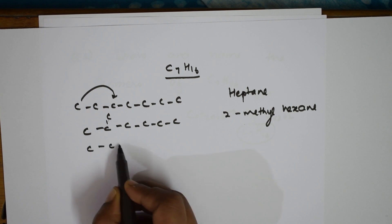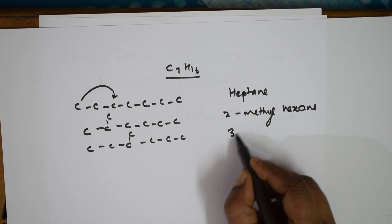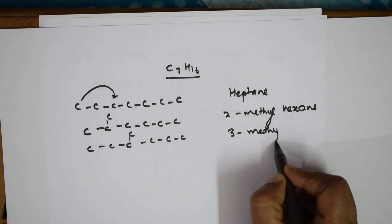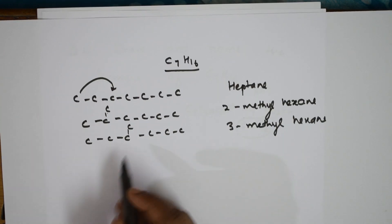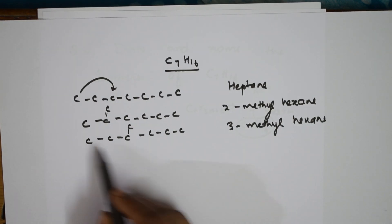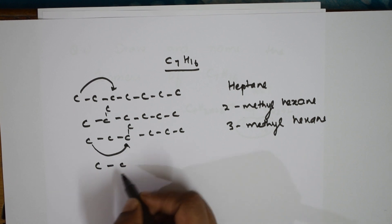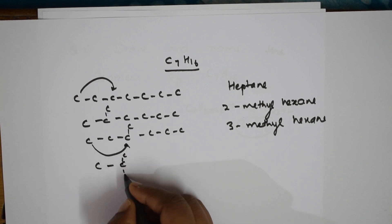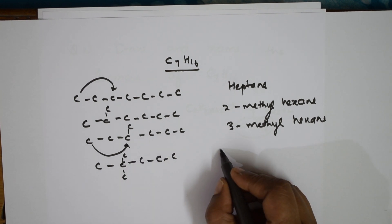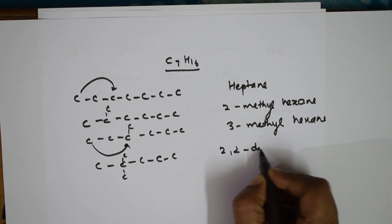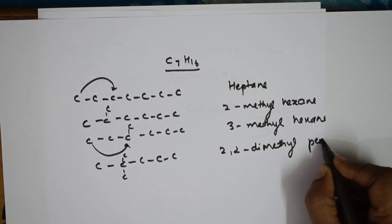Now I'm going to shift the methyl group further along the chain: 1, 2, 3, 4, 5, 6 — this becomes 3-methylhexane. Now shift this group again, adding another methyl branch: 1, 2, 3, 4 — this is 2,2-dimethylpentane.